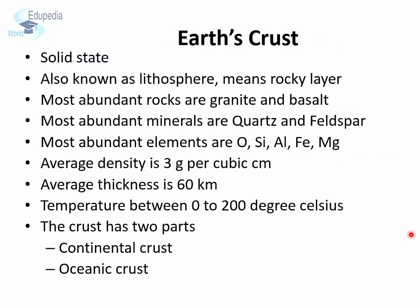The outermost layer of the earth is the crust. It is in solid state. We also know it as the lithosphere, which means rocky layer. The most abundant rocks of the earth's crust are granite and basalt. These two rocks are also known as the primary rocks since all other rocks are derivatives of these. The most abundant minerals found in the earth's crust are quartz and feldspar, and granite and basalt also have an abundance of quartz and feldspar.